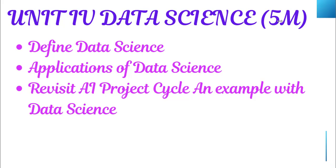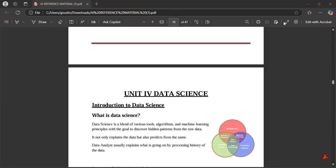The second definition for data science: Data science is a blend of various tools, algorithms, and machine learning principles. The goal is to discover hidden patterns from the raw data. It not only explains the data but also predicts from the same. You can write this second definition — it's a blend of tools and algorithms and machine learning principles used to discover hidden patterns from raw data.